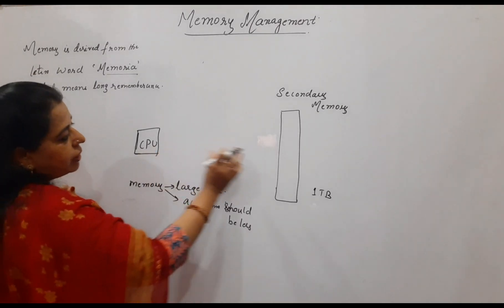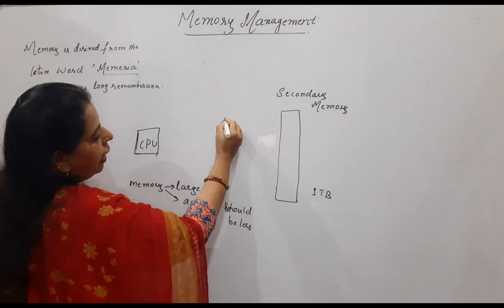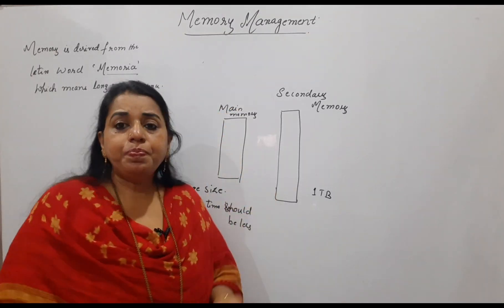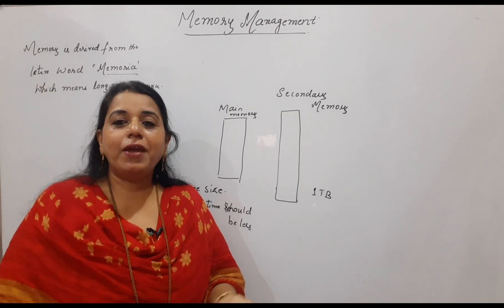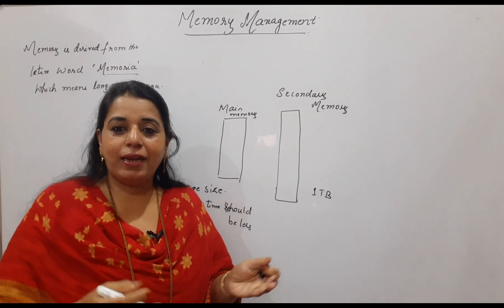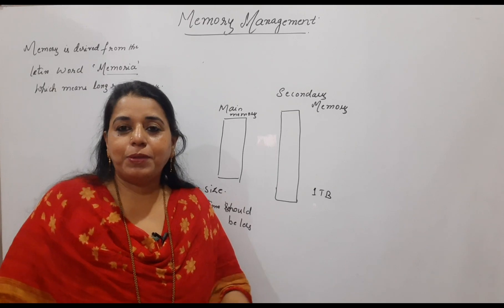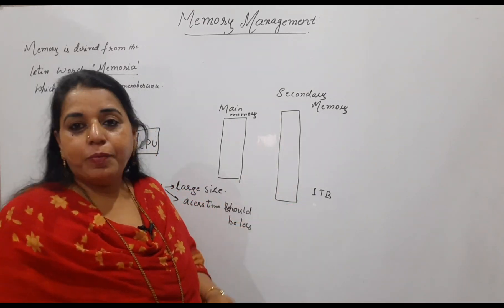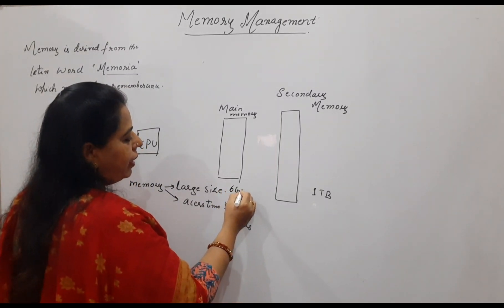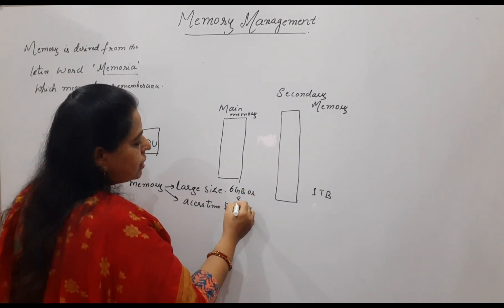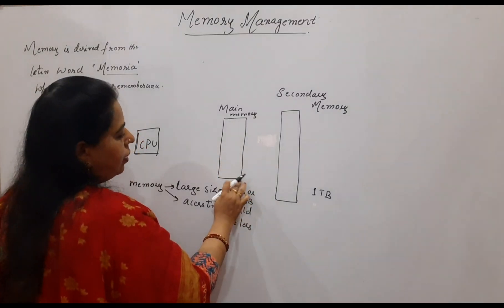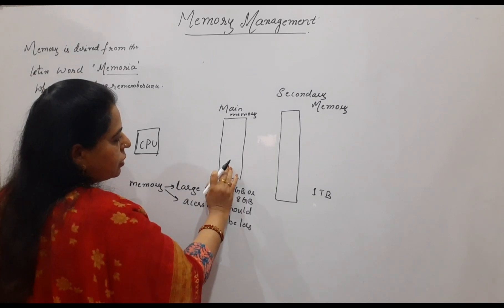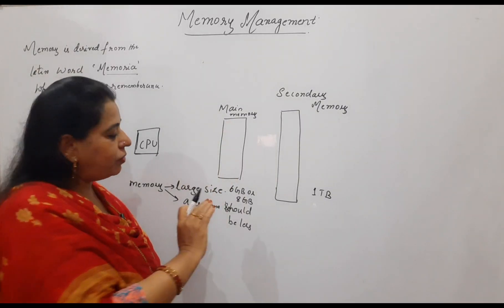That is the reason, in between the CPU and the secondary memory, you have another type of memory called the main memory. For the main memory, we normally call it RAM. If you see in your systems, the RAM size nowadays for laptops is like 6GB or 8GB, whereas you are getting secondary memory of 1TB. So 6GB or 8GB is quite a small size.